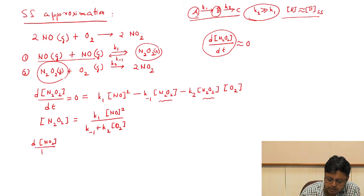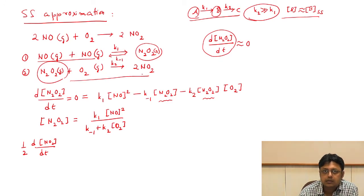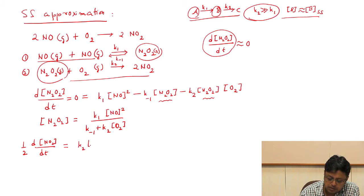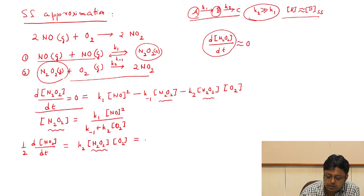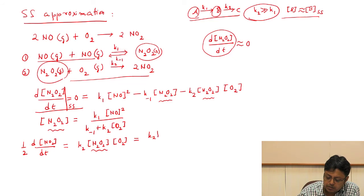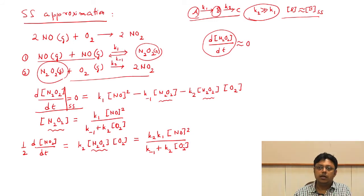The rate of reaction, (1/2)d[NO₂]/dt, is determined by step 2, which is where NO₂ is formed: rate = K₂[N₂O₂][O₂]. Substituting the steady-state expression for [N₂O₂], we get rate = K₂ · K₁[NO]² / (K₋₁ + K₂[O₂]) · [O₂]. However, we have not yet recovered the simple observed rate law — we need a further assumption.